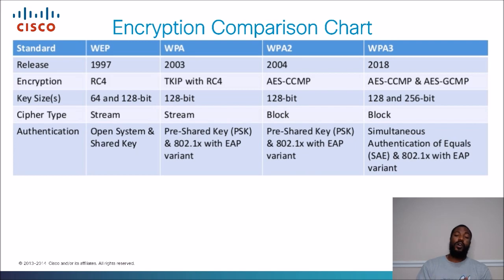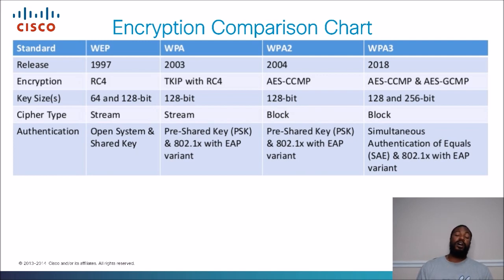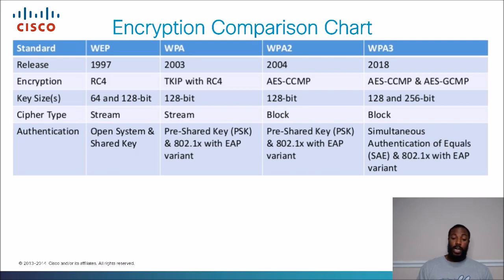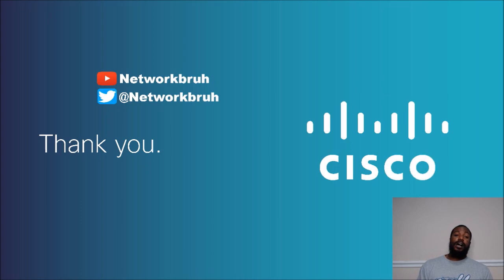We're going to do another video on authentication — basically the password. Go ahead and pause and freeze frame to know the differences between TKIP, AES CCMP, and AES GCMP, and know that we encrypt our data using these types of methods. We're not going to do any hands-on today. This was just a quick rundown of what encryption is and the different types of encryption used in different wireless standards today.